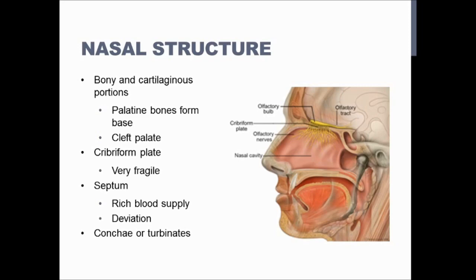You have four pairs of paranasal sinuses — para meaning surrounding — so the sinuses surrounding the nose. They are the frontal sinuses, the sphenoid sinuses, the ethmoid air cells, and the maxillary sinuses. They're little air pockets in your skull that should normally be fairly empty. They allow your skull to be lighter and allow for sound resonance when you're speaking. That's why if you have a sinus infection, your voice sounds more nasal — because those air pockets are occluded with mucus.